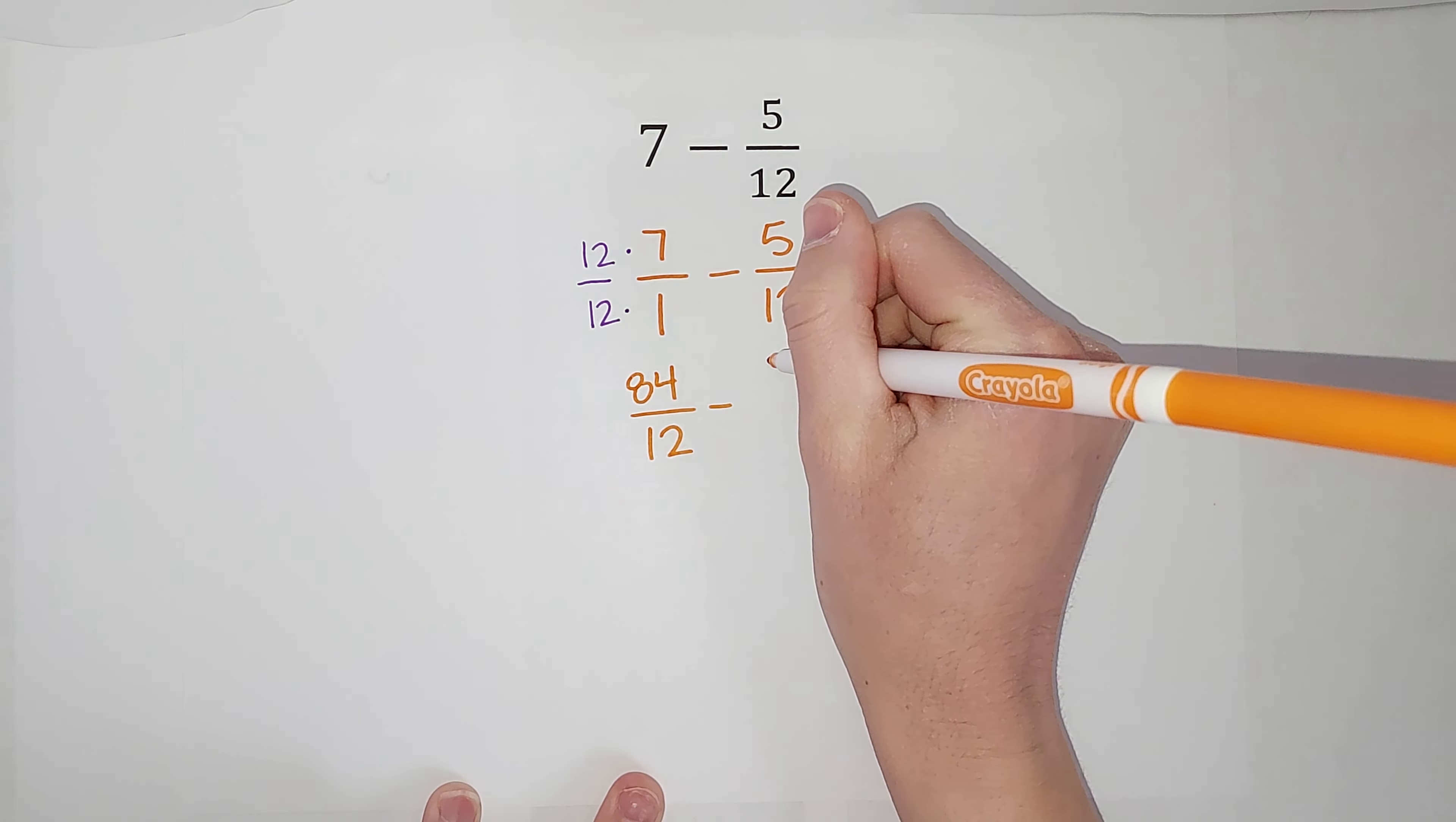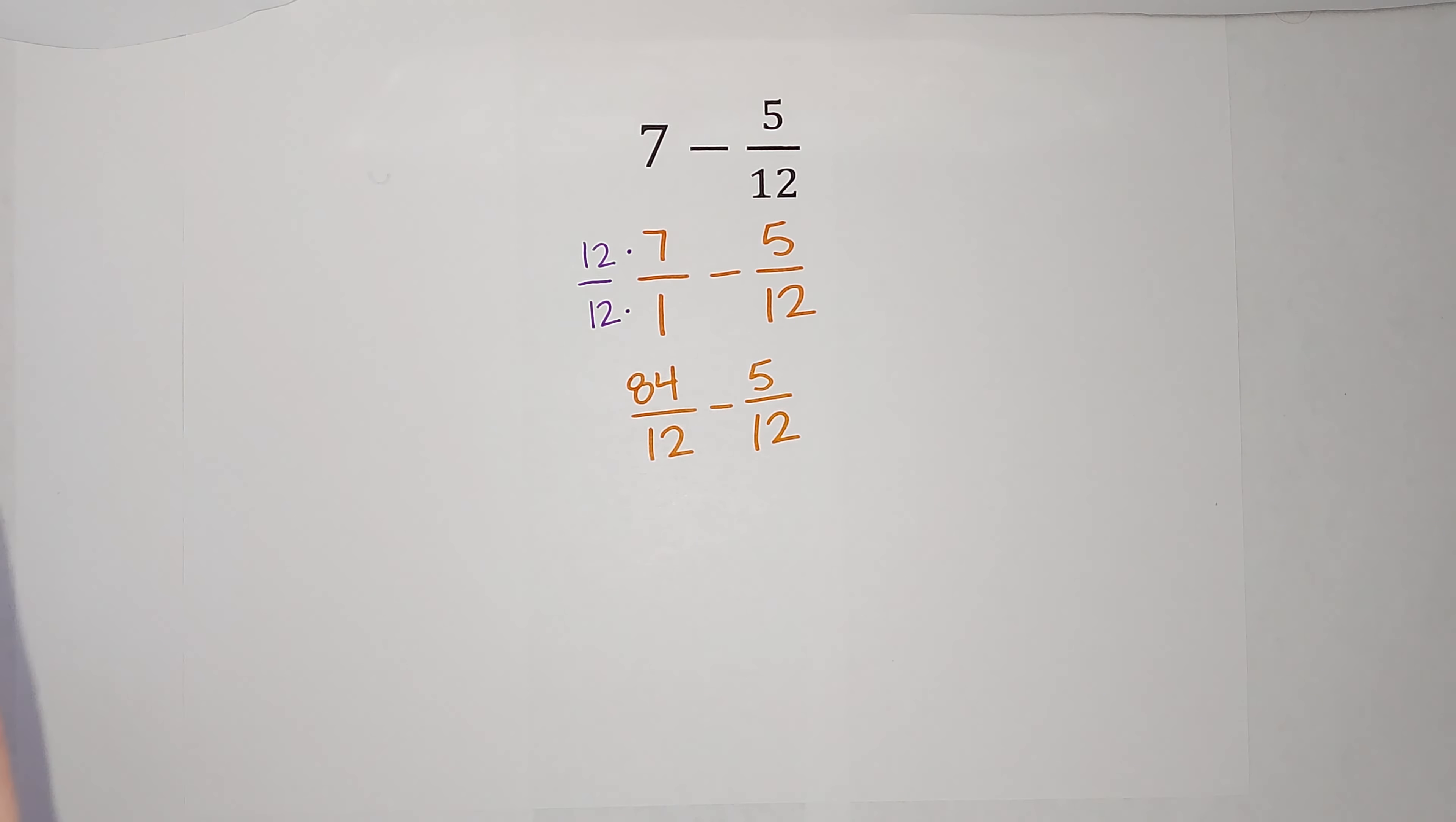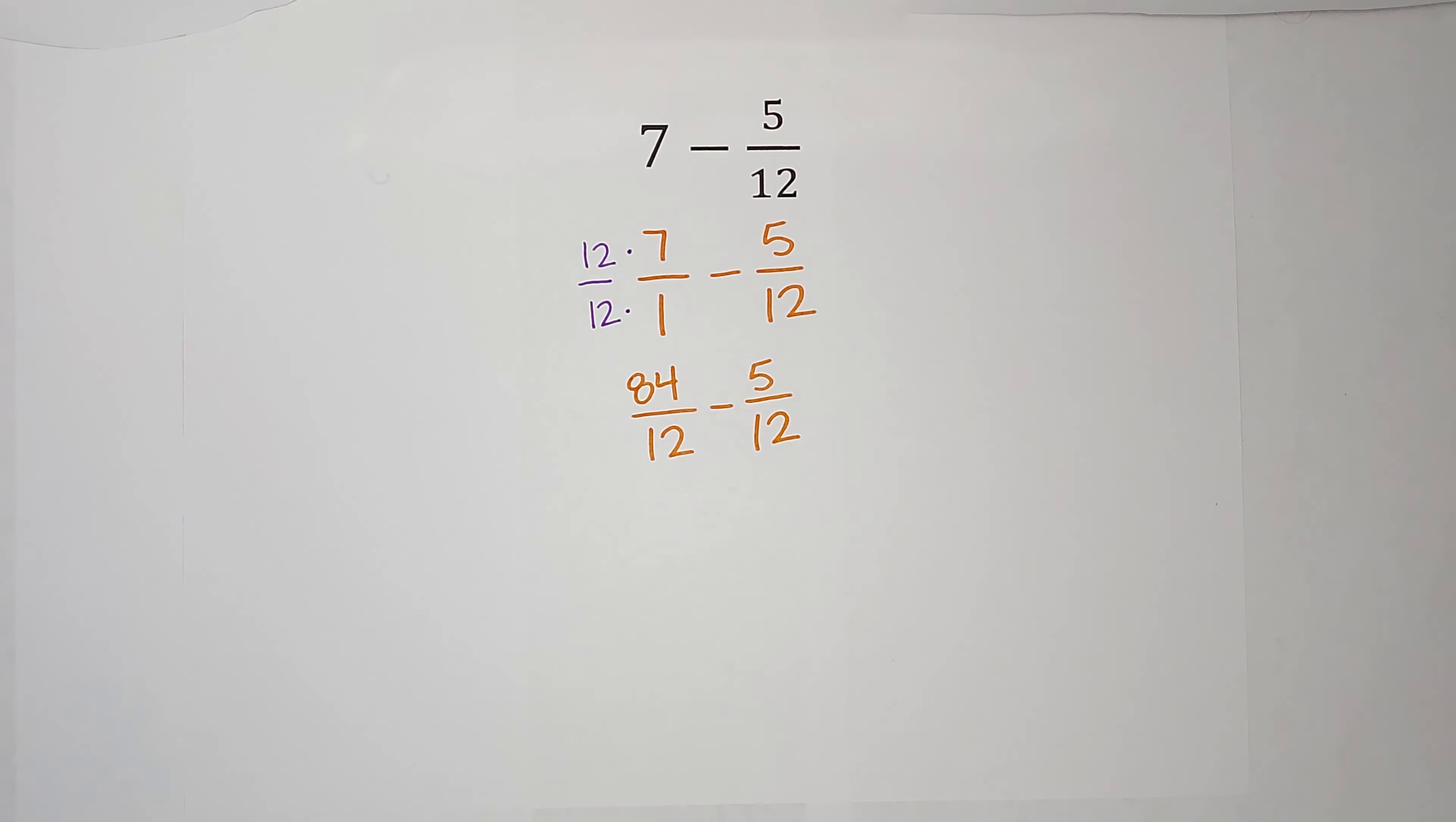So we are subtracting 5 twelfths. Hold with me for a second. If you put 84 divided by 12 in your calculator, you're going to get 7. So it's still 7.